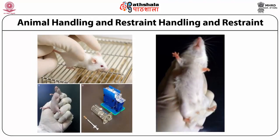Now we will talk about animal handling, restraint, and how procedures are done in mouse models. This is very important for immunological and other research. If you don't handle the mouse properly, your research will not get good results, there will be variation in results, and the animal will be stressed. The first slide shows how a person lifts the mouse with two fingers and handles it with one hand.